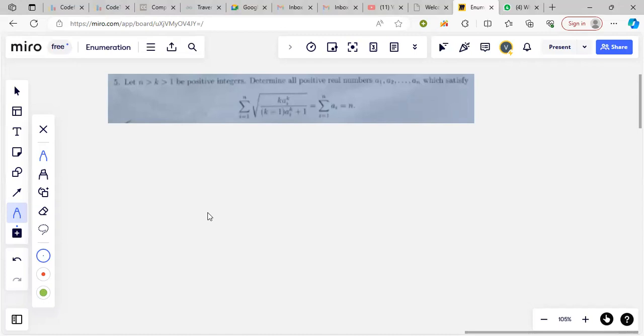I'm going to tell the solution for RMO P5. The summation we are given is i going from 1 to n, root of k i to the k by k minus 1, a i to the k plus 1, and then given that is equal to n.